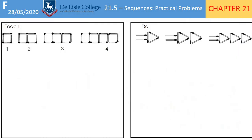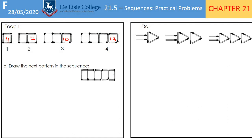Here's another teach example — you may want to copy this one down. Question: draw the next pattern in the sequence. We've got 4 matchsticks, then adding 3 each time gives 7, then 10, then 13. So the next pattern — the fourth term — just adds 3 more matchsticks, giving 16 matchsticks in total.